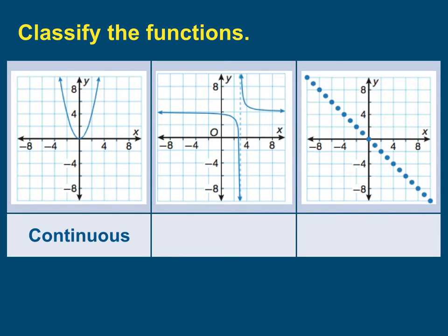In the second graph, which seems like it's made up of two parts, we call this a discontinuous curve. It's discontinuous at x equals three.